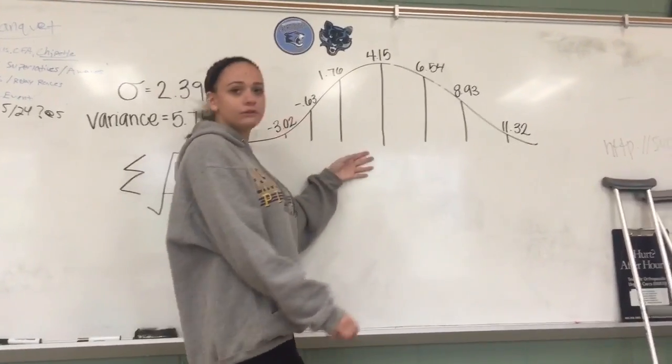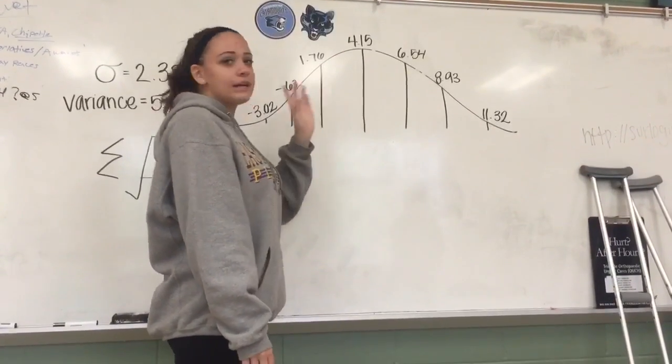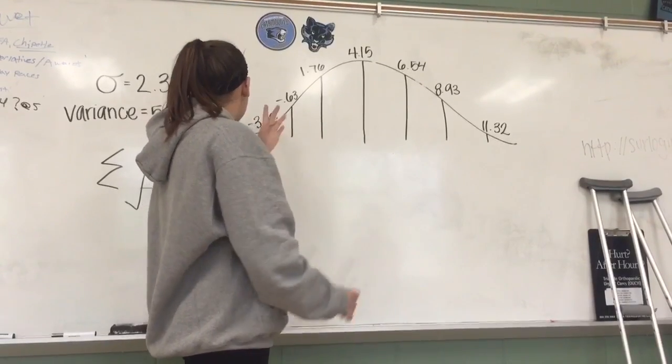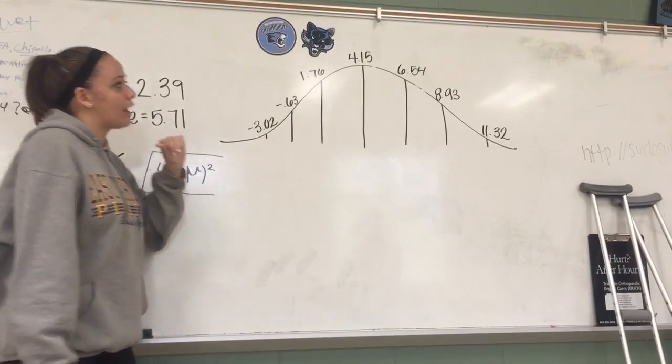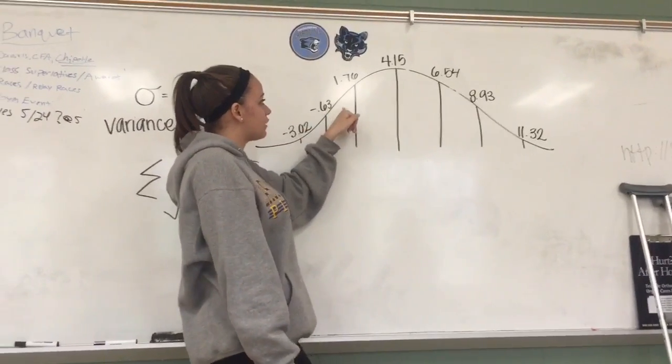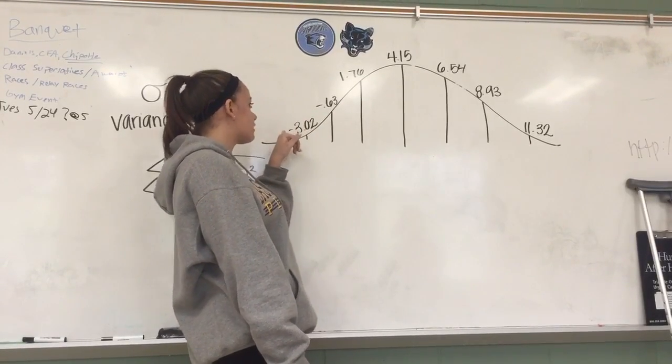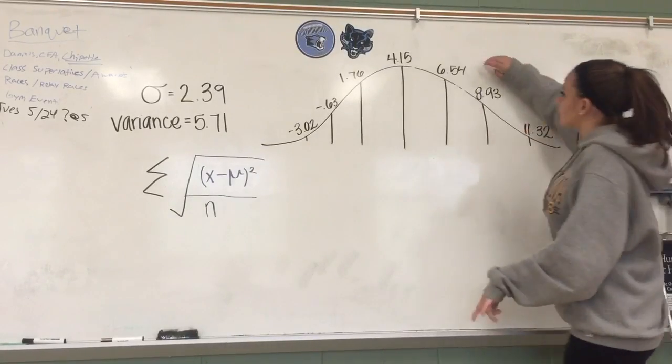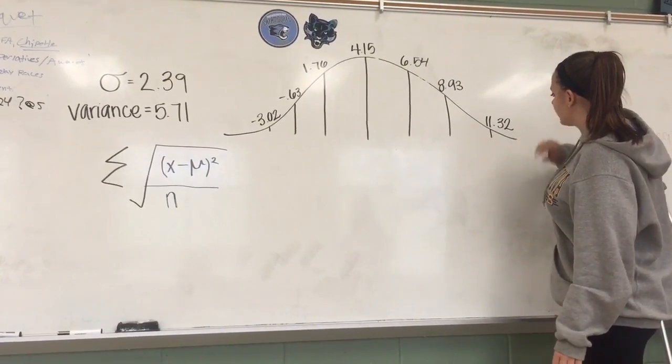So onto the normal bell curve graph, you're always going to put your mean in the middle, so that is 50% of the data on either side. So then what you're going to do, you're going to take your standard deviation and add and subtract it on either side. So when you subtract it over here, you get 1.76, subtract it again, negative 0.63, and then again, negative 3.02. But if we're going to add our standard deviations, we're going to get 6.54, then 8.93, and then 11.32.